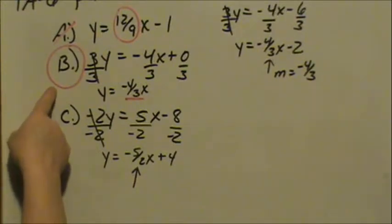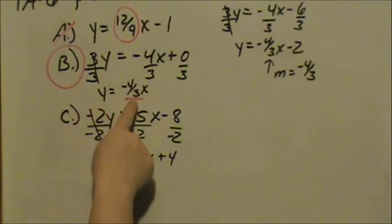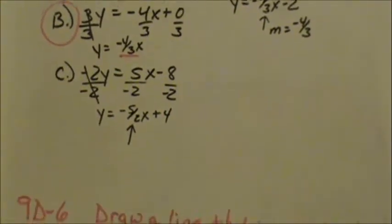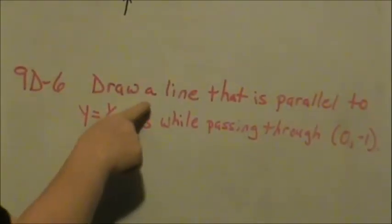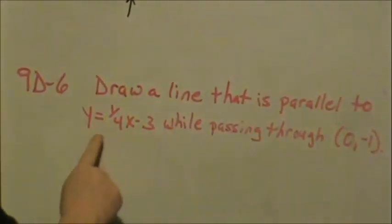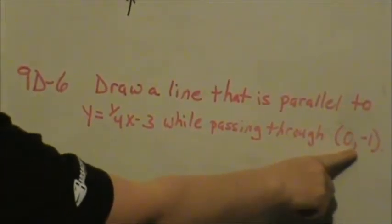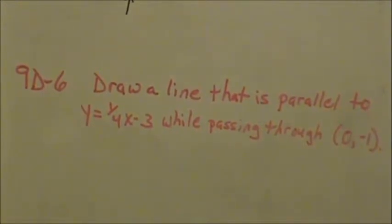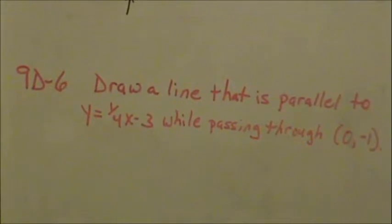So the only one that is parallel to the equation that they give us is B, because we were looking for slopes of negative 4 thirds. Now let's go down here to 9D-6. That problem says, draw a line that is parallel to y equals 1 fourth x minus 3 while passing through the point 0 negative 1. We're talking about parallel lines. Parallel lines have the same slope.